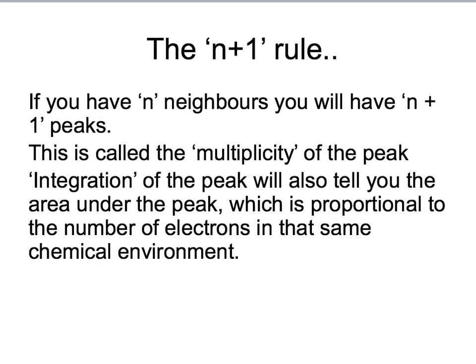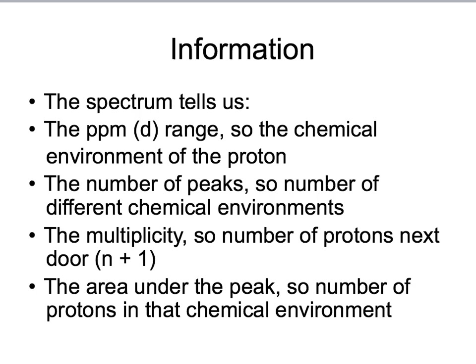So, the n plus one rule says that if you have n protons next door, you will also have n plus one peaks. This is called the multiplicity of the peak. Integration of the peak will also tell you the area under the peak, which is proportional to the number of electrons in that same chemical environment. So, in summary, the spectrum can tell us the ppm or delta range, giving us the chemical environment of the proton using a datasheet. The number of peaks, so number of different chemical environments. The multiplicity or splitting, which gives us the number of protons next door. And the area under the peak, so the number of protons in that same chemical environment.